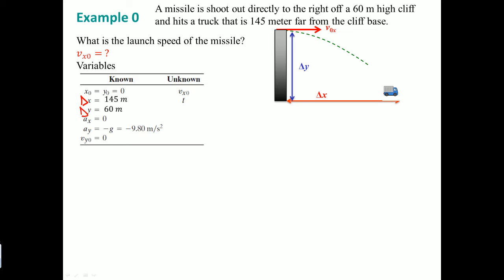Delta Y is 60 meters, the height of the cliff. We take the launch point as (0, 0), so the truck's position is (145, 0) and the top of the cliff is (0, 60) on a coordinate grid. For gravity, we say ay equals negative g, which is negative 9.8 m/s². Our end goal is to solve for vx₀.